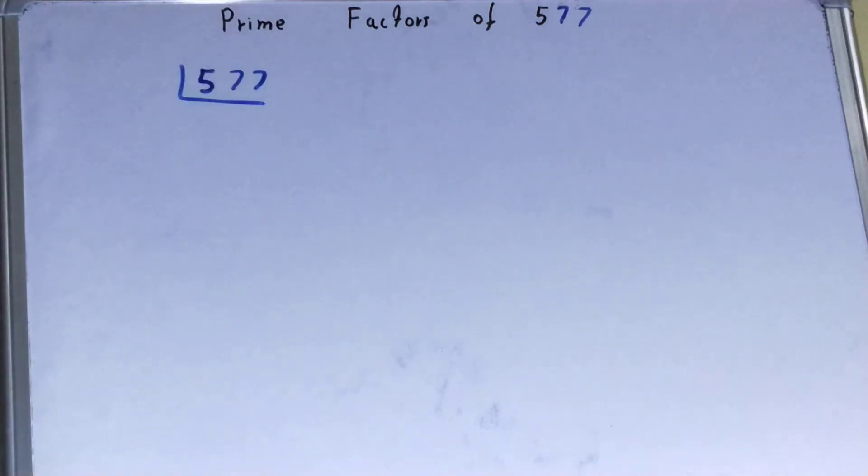Before solving this, you must know that the number 577 is a prime number. Prime numbers are only divisible by themselves, so to divide 577 you need 577 on the left-hand side.